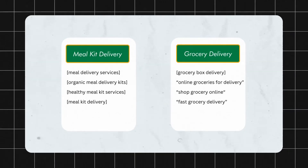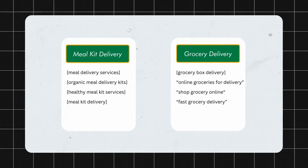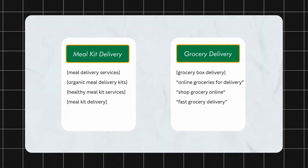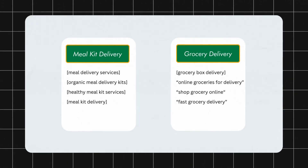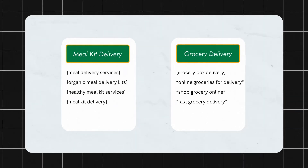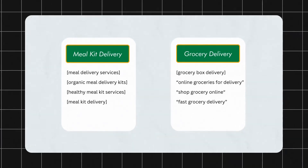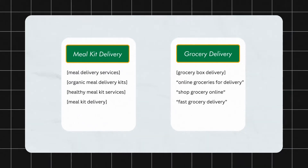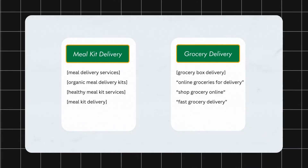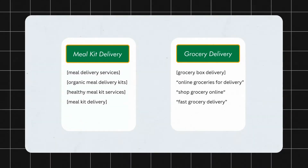So we'll create a separate ad group for meal kit delivery — you could have a mix of exact match and phrase match keywords there — and then a separate ad group for online grocery delivery in a similar manner. That's a better way to group your keywords into ad groups, which also means you can better tailor your messaging within your ads.